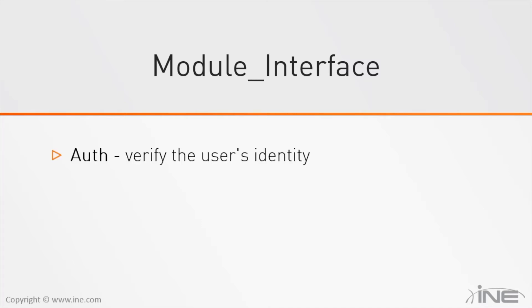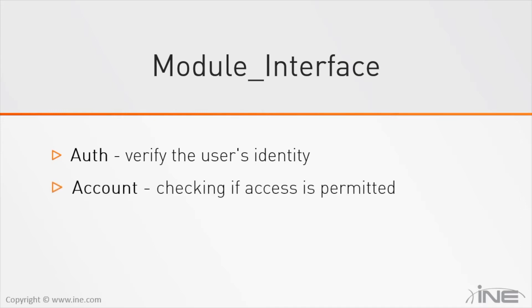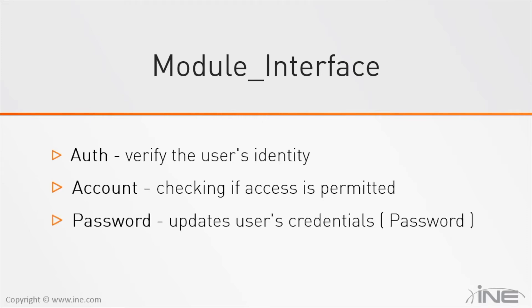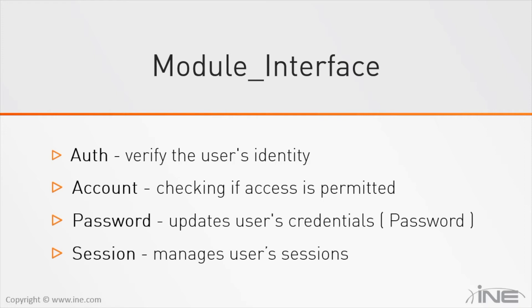We have four types of PAM module interfaces, each corresponding to a different aspect of the authorization process. Auth is responsible for verifying the user's identity — modules listed here generally support prompting for a password. Account verifies that access is allowed; for example, it checks if a user account has expired or if a user is allowed to log in at a particular time of day. Password modules are responsible for changing passwords and may also be used to enforce strong passwords.